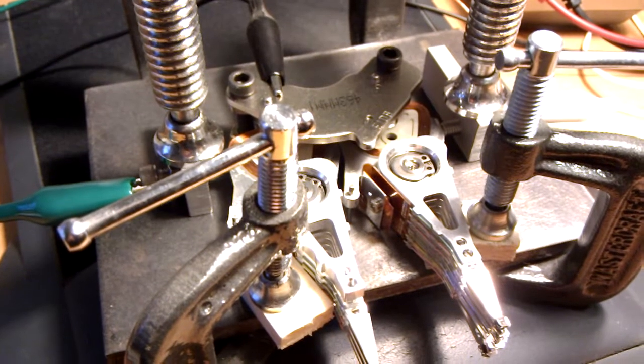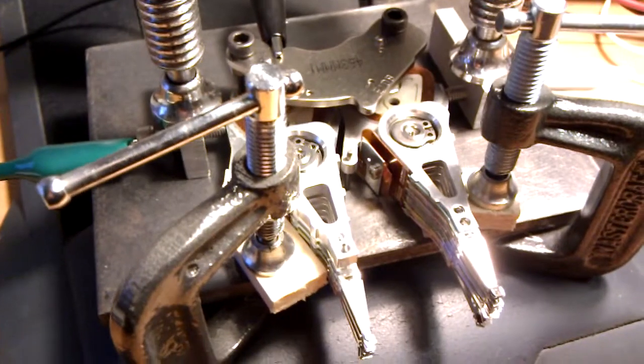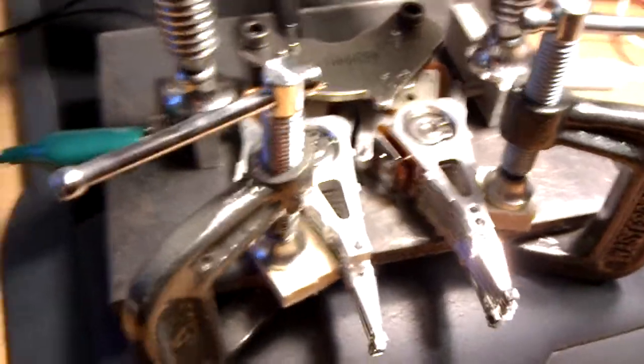Sean here, VE3HJ, with the iambic keyer. A few more changes here for part 3.